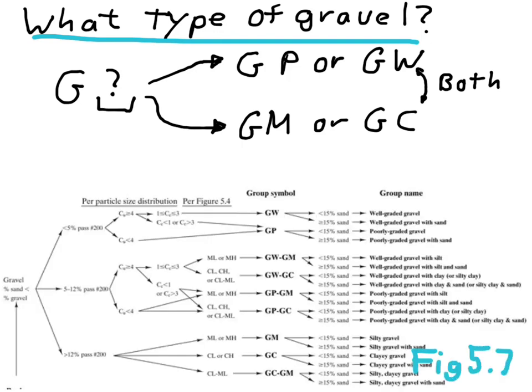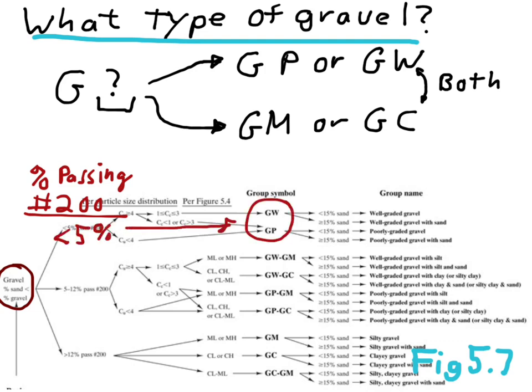So to determine what is a small amount or a large amount of fines, we must refer to the ASTM classification chart, and this is part of Figure 5.7, just the gravel portion. So we've already determined that it's a gravel. Then we look at the percent passing the number 200 sieve to determine which of these methods we're going to have to use to classify it. And if there's less than 5% fines, that's the small amount of fines, and the soil is going to classify either as a GW or a GP.